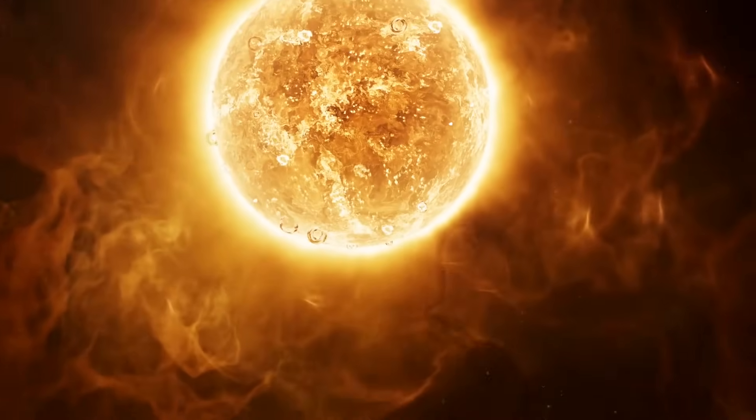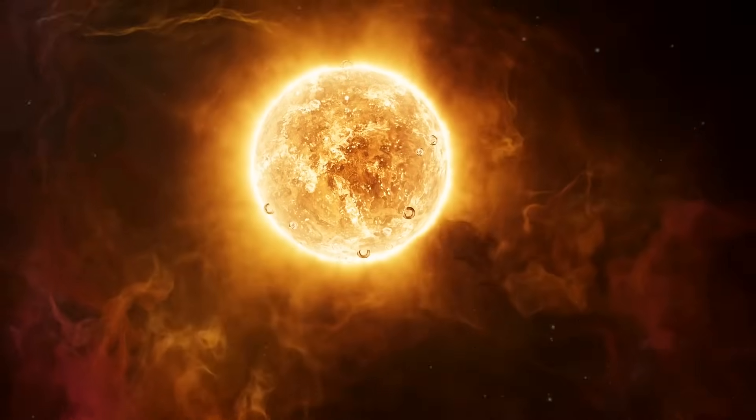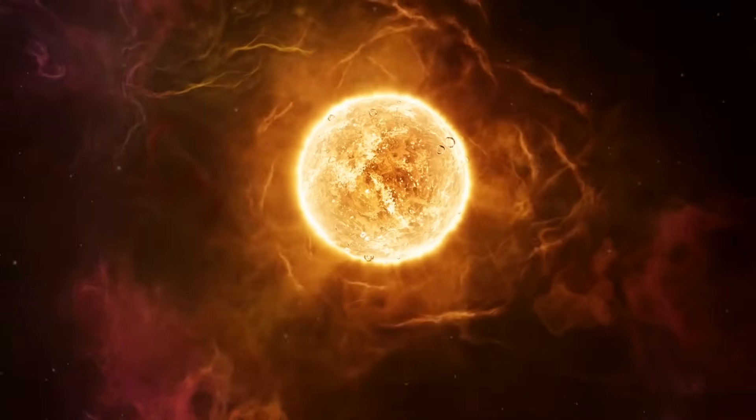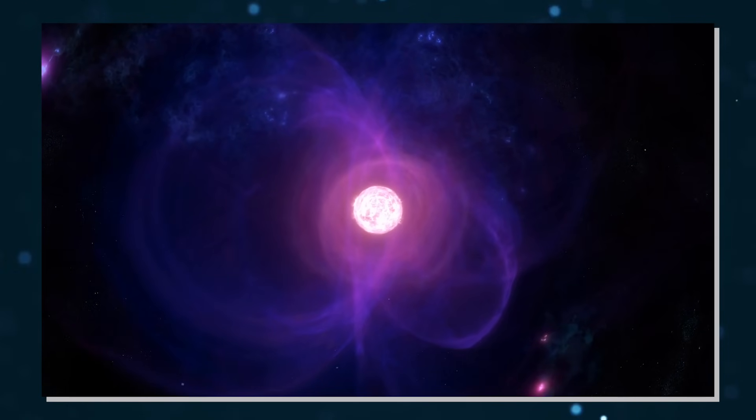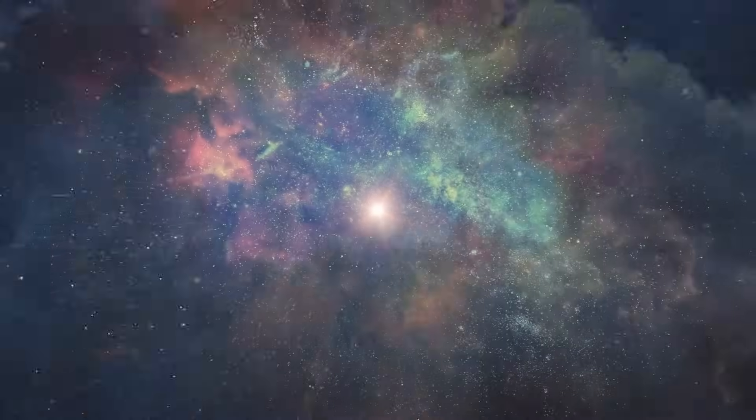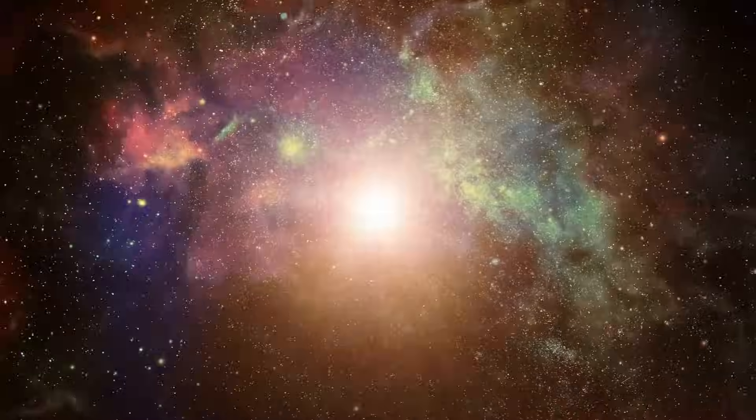It's difficult to imagine the scale of this—an object totaling about 20 solar masses, spread out over the volume of Jupiter's orbit, whose inner core is comparable to, and more massive than, the size of the Sun, suddenly begins to rapidly collapse.